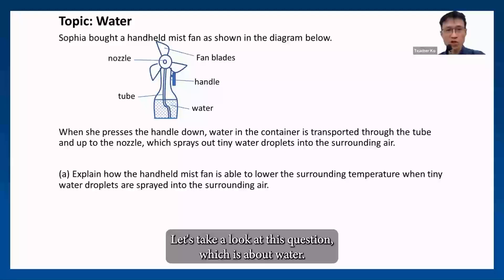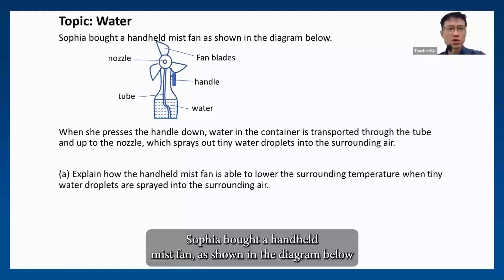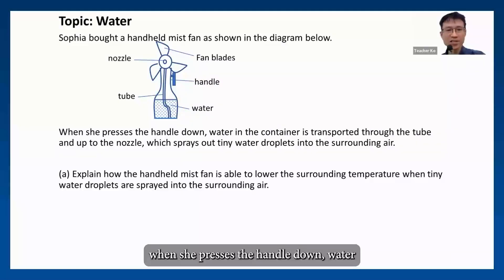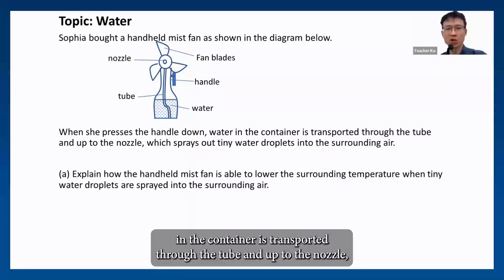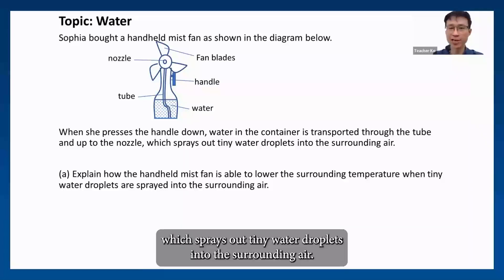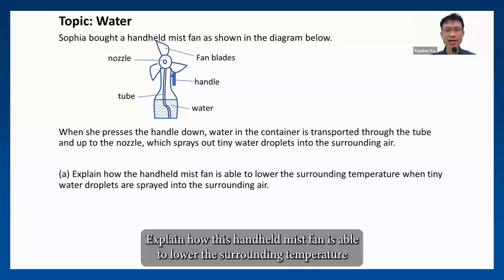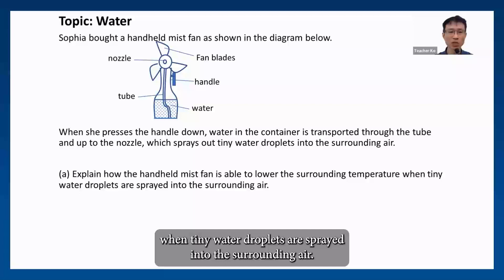Let's take a look at this question which is about the water cycle. Sophia bought a handheld mist fan as shown in the diagram below. When she presses the handle down, water in the container is transported through the tube and up to the nozzle which sprays out tiny water droplets into the surrounding air. Explain how this handheld mist fan is able to lower the surrounding temperature when tiny water droplets are sprayed into the surrounding air.